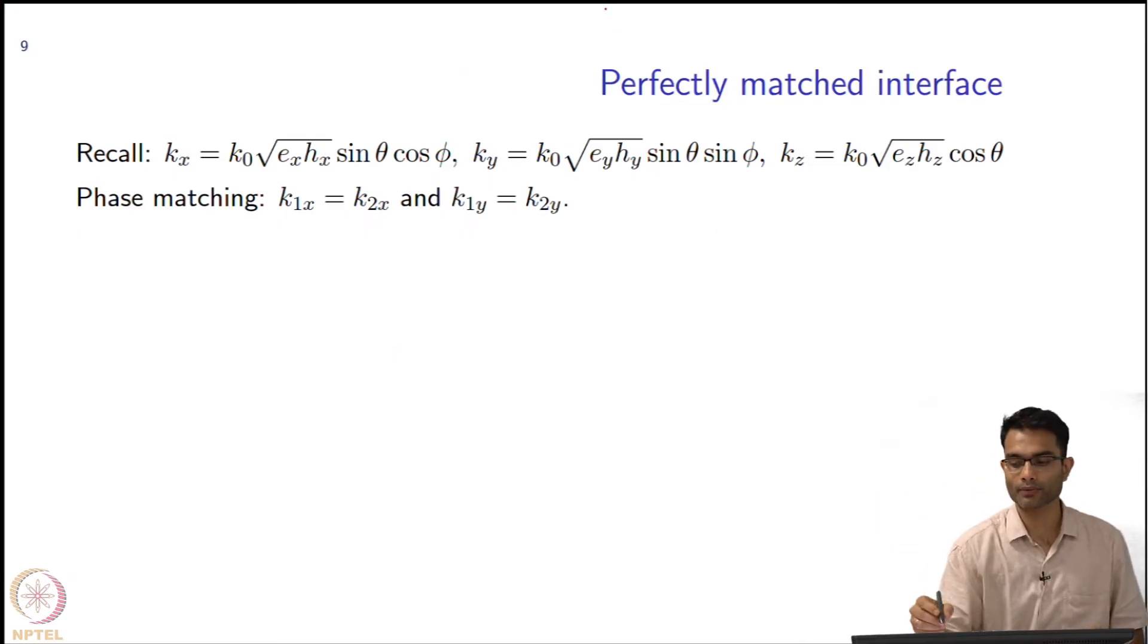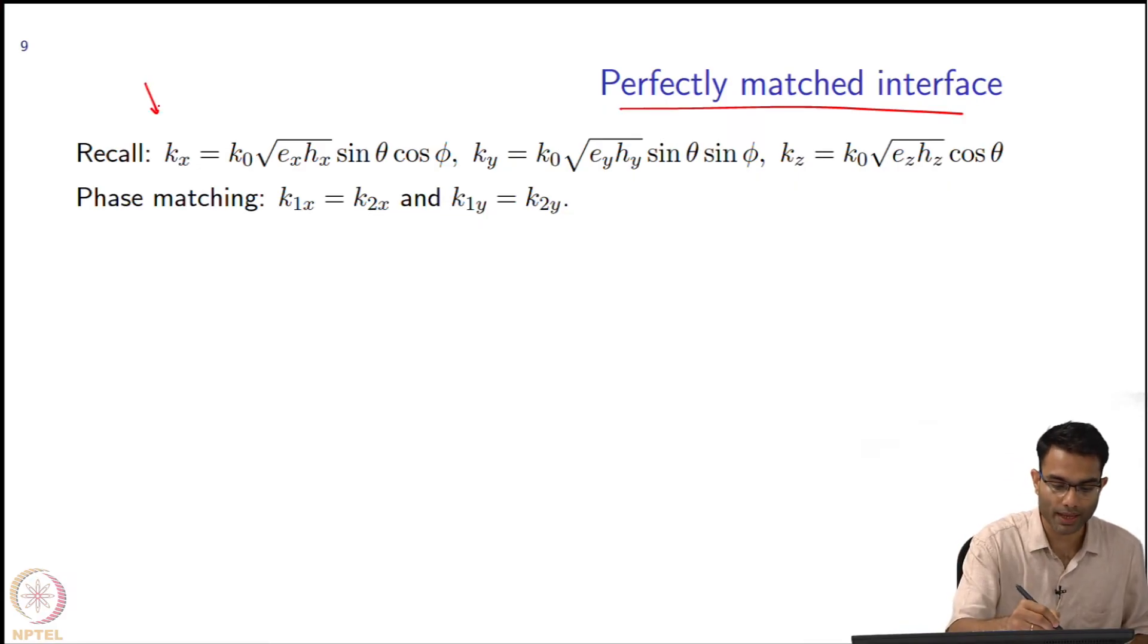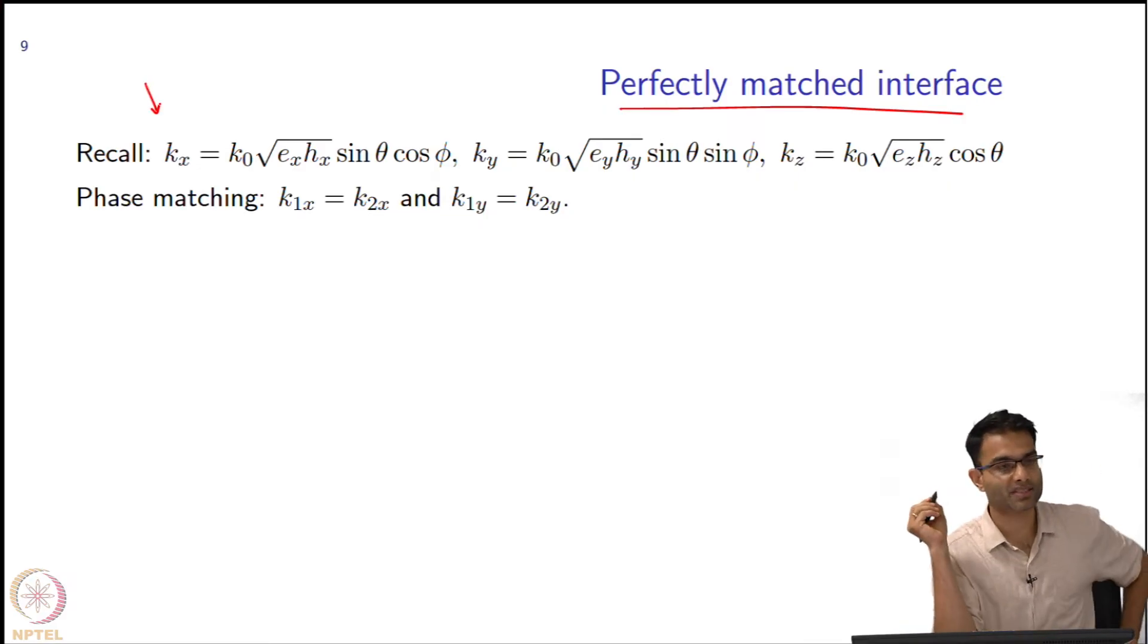Now we are going to look at what is called a perfectly matched interface, and this is by means of revision. What was our k_x? We defined it in this way - this was in the previous few slides.